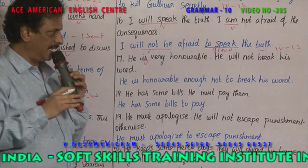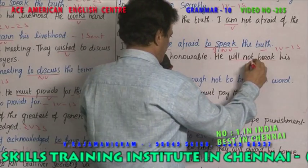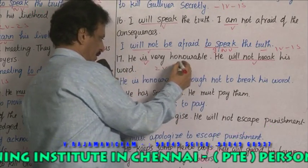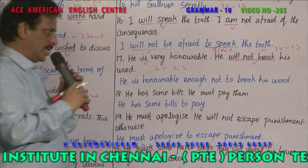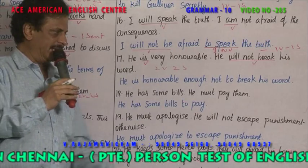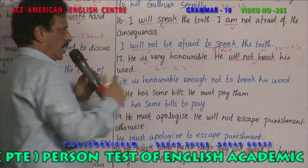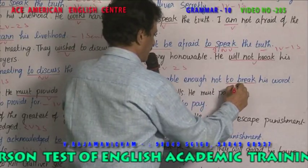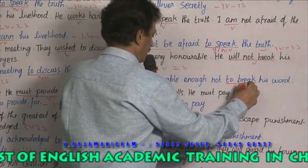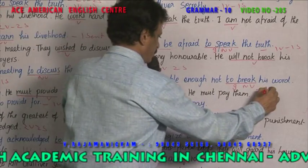Example 12: 'He is honorable' — 'is' is the verb; an honorable, very honest person. 'He will not break his word' — 'will not break' is the verb. Two verbs, two sentences. Combined: 'He is honorable enough not to break his word.' 'Will not break' changes to the infinitive 'to break.' 'Is' is the single verb. One verb, one sentence.